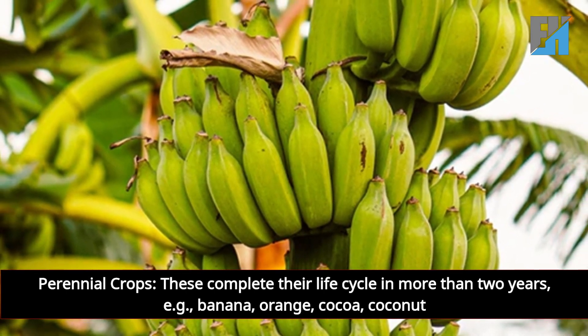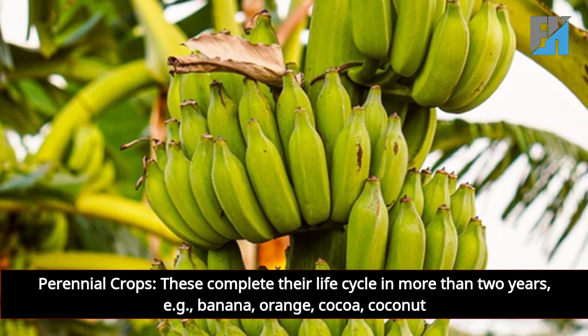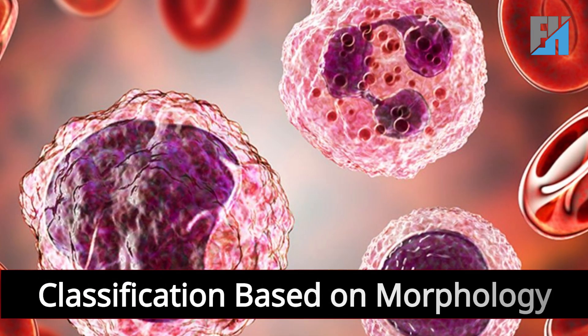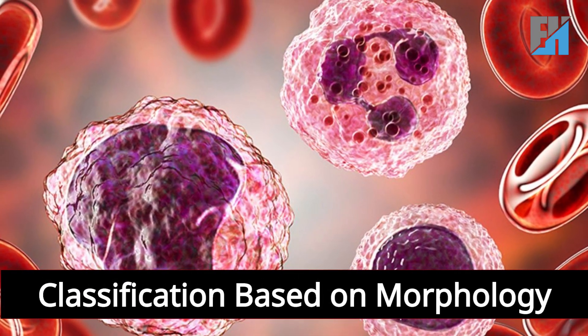For example: banana, orange, cocoa, coconut. Classification based on morphology.